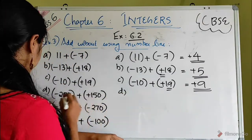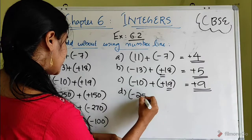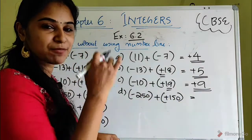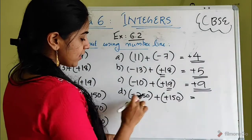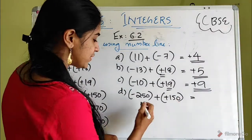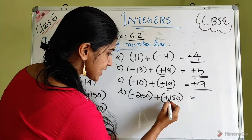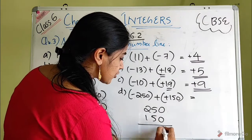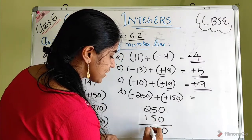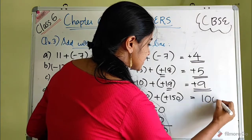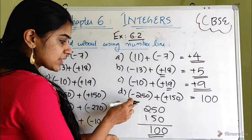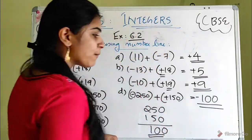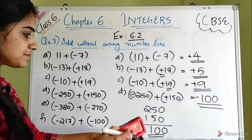Question D: minus 250 plus plus 150. This is a different sign case, so we take the difference. 250 minus 150: 5 minus 5 is 0, 2 minus 1 is 1, so the difference is 100. The bigger number is 250 and it is negative, so the answer is minus 100.